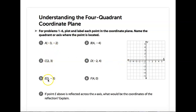We'll stay on E for a minute. So remember we always start at zero, and then we count over when it's positive: 1, 2, 3. And then we go down for negative: 1, 2, 3. And this is point E.